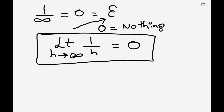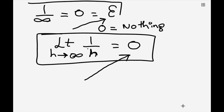As the h value approaches infinity — that is, a bigger and bigger number — my value is tending towards zero. This makes sense. But directly, we can't say that one by infinity is equals to zero.